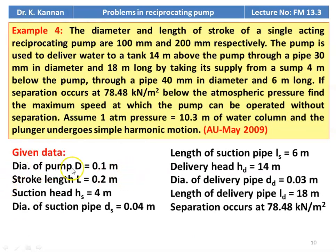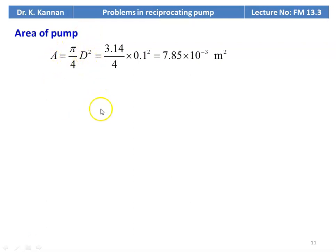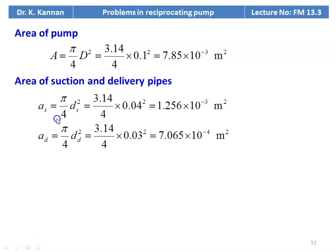Given: diameter of pump = 0.1 m, stroke length = 0.2 m, suction head HS = 4 m, diameter of suction pipe = 0.04 m, length of suction pipe = 6 m, delivery head HD = 14 m, diameter of delivery pipe = 0.03 m, length of delivery pipe = 18 m, separation at 78.48 kN/m². Area of pump A = π/4 × 0.1² = 7.85×10⁻³ m². Area of suction pipe AS = π/4 × 0.04² = 1.256×10⁻³ m². Area of delivery pipe AD = π/4 × 0.03² = 7.065×10⁻⁴ m².